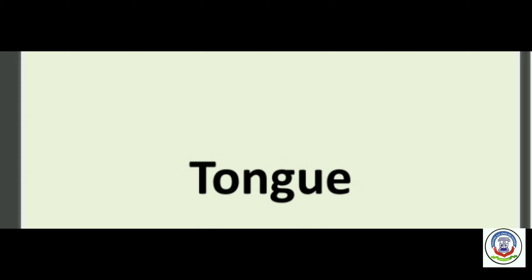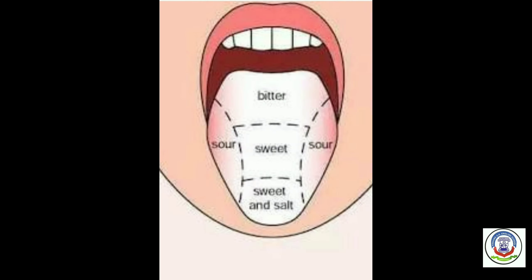The tongue is a fleshy, muscular organ located in the buccal cavity. During chewing, it helps to mix food with saliva, a digestive juice produced by the salivary glands. It also helps us to swallow food. The tongue is a very important sense organ. Structures called taste buds, located on its upper surface, help detect four different tastes: sweet, salty, bitter, and sour. The tongue also helps us to speak.